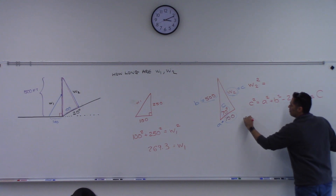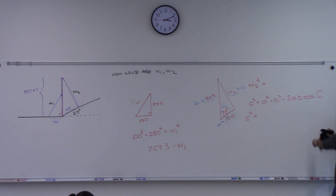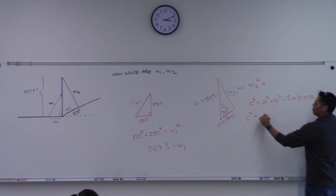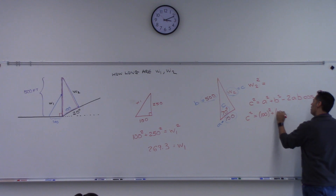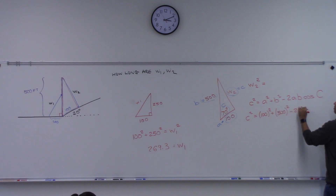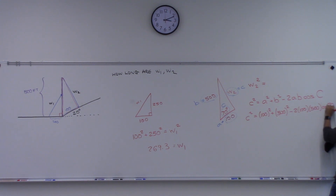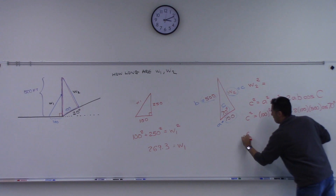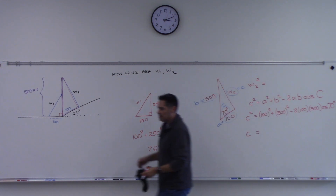Using the formula: little c squared equals little a squared plus little b squared minus two times little a times little b times cosine of capital C. So c squared equals 100 squared plus 500 squared minus two times 100 times 500 times cosine of 70 degrees.